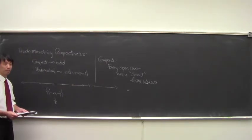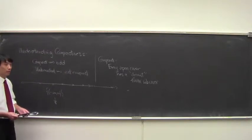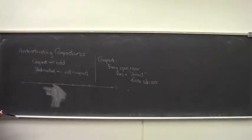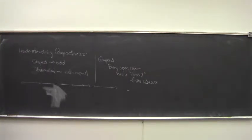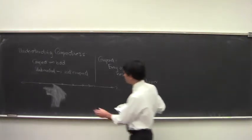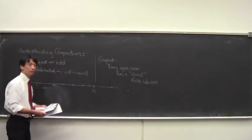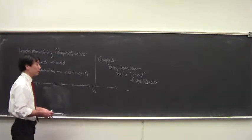A student suggests: whatever open cover you choose, take the upper bound of it and show the sequence always exceeds it — when proving something's unbounded, you pick a number and show there's always something greater. The professor acknowledges this and redirects, noting the answer depends on what cover you choose.